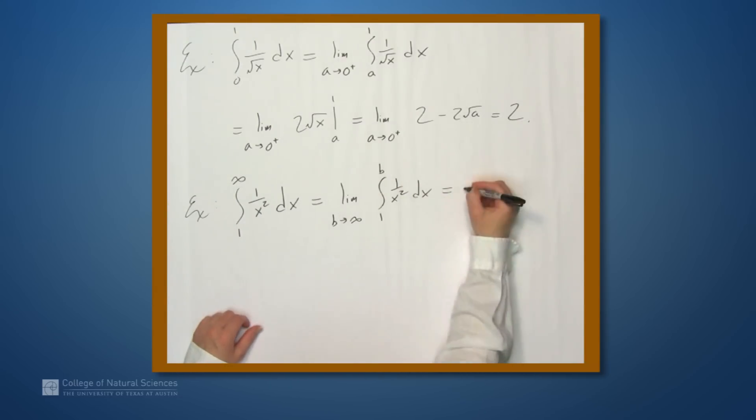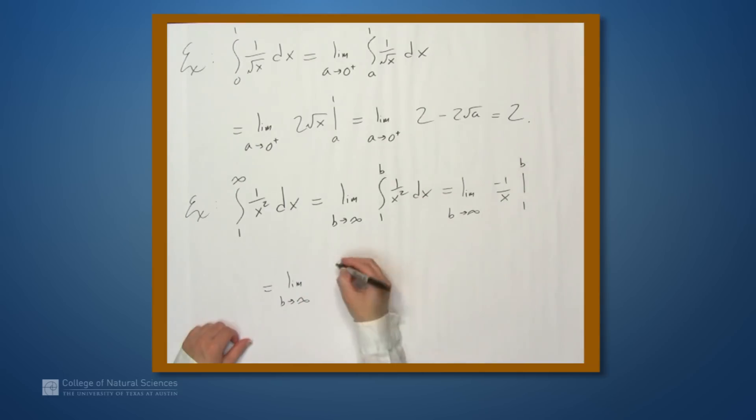So what do we get here? We get the limit as b approaches infinity of negative 1 over x evaluated from 1 to b. So when we evaluate this at b, we get negative 1 over b minus the evaluation at 1, so we get negative 1 over 1.